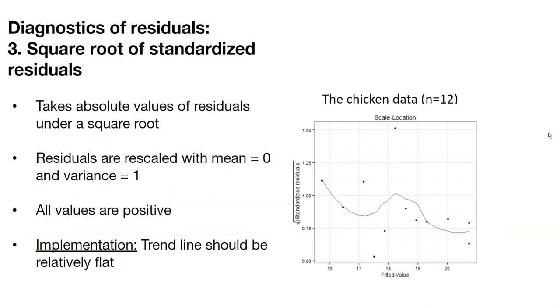Another way to look at the residuals is to take the square root of those standardized residuals. When we take the square root, we're taking the absolute value of the residuals in that square root. The residuals then are rescaled with a mean of zero and a variance of 1.